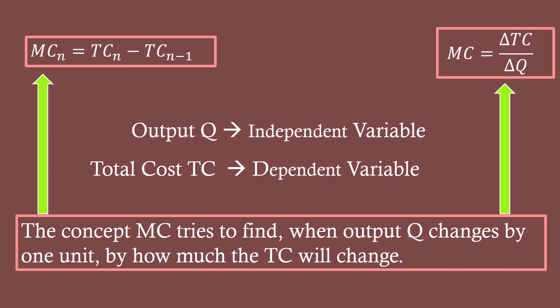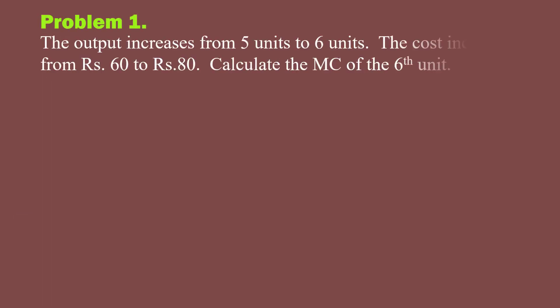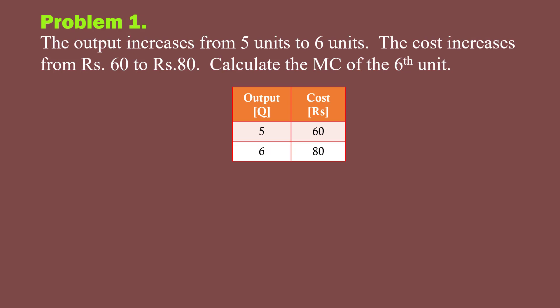With this, let me show you two problems to make my point clear. Problem 1: The output increases from 5 units to 6 units. The cost increases from 60 rupees to 80 rupees. Calculate the marginal cost of the 6th unit. We shall examine which formula is suitable for this problem. As a first step, we shall form a table showing output and cost.